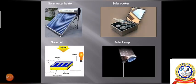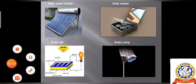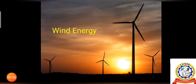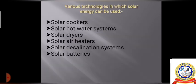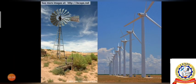Some solar energy examples with figures: solar water heater, solar cooker, diagram of a solar cell, and the application of a solar lamp. Wind energy is the second most effectively used renewable energy after solar energy. These are pictures of different wind turbines.